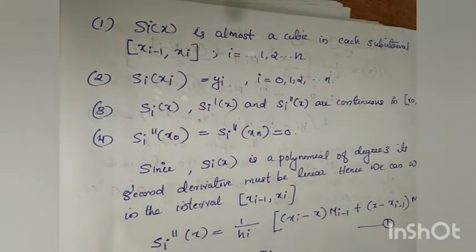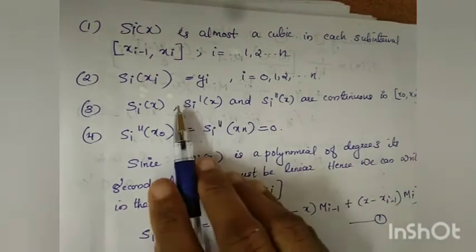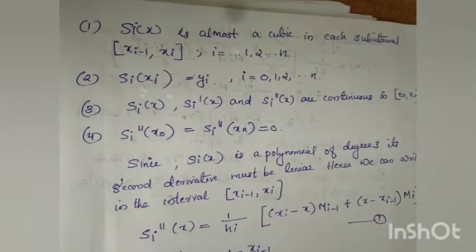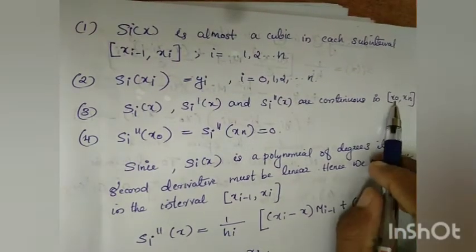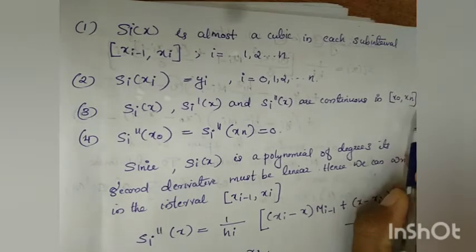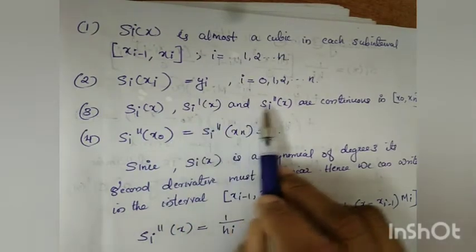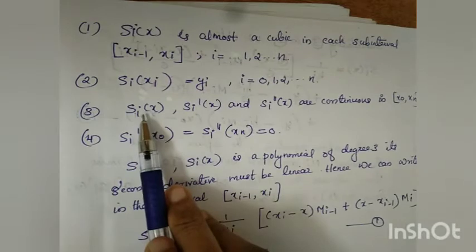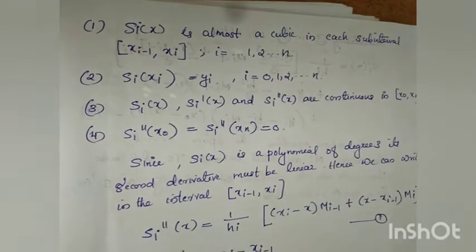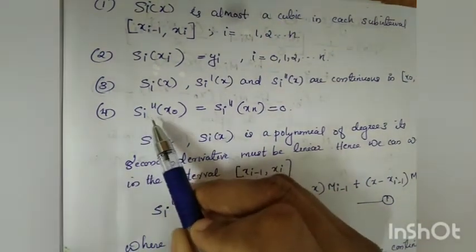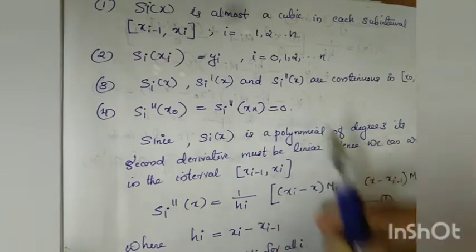The next condition is that si(x), its first derivative si'(x), and its second derivative si''(x) are continuous in the interval x0 to xn. So the spline function's first and second derivatives are continuous throughout the interval. The boundary condition is si''(x0) equals si''(xn), which equals 0.